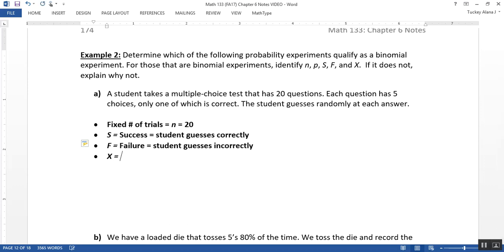So that's what S is, and that's what F is. X is always the number of successes. So in our case, it would be the number of questions guessed correctly. So you don't want to just say the number of successes, although that's true. You want to put it in the context of the problem that you're working on. The context we're working on would have it be the number of questions guessed correctly.